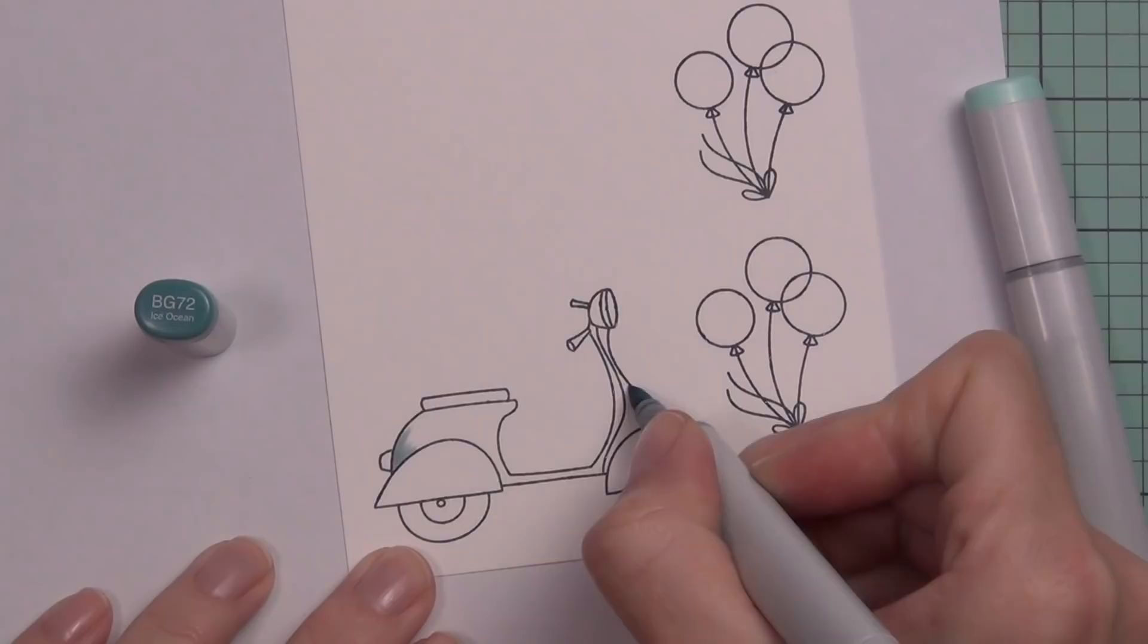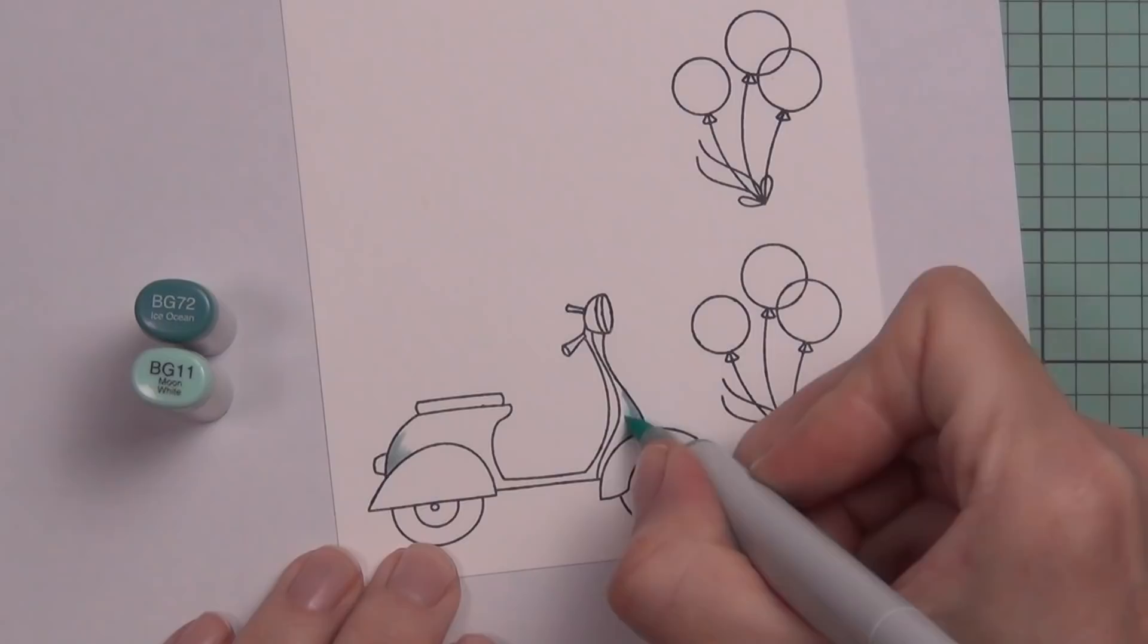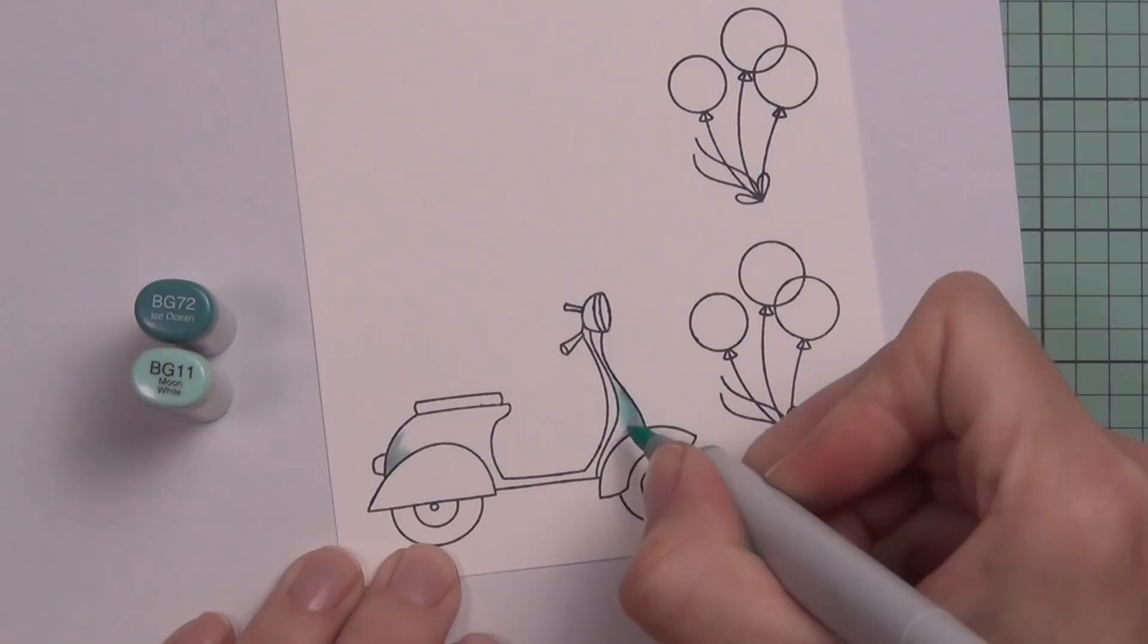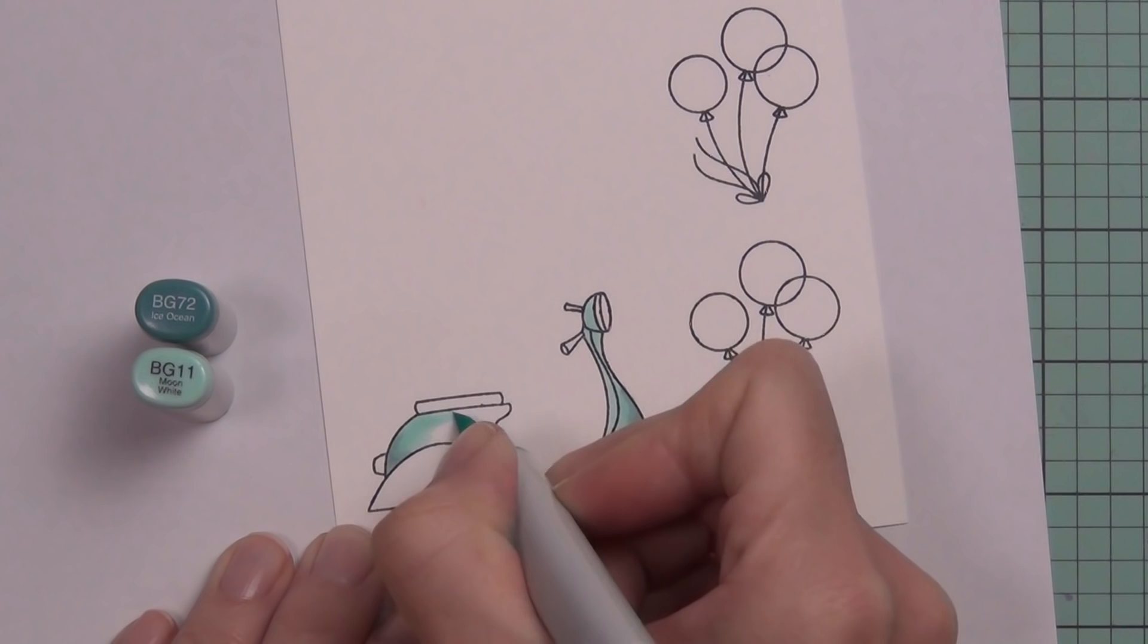I thought it would be a good idea to make two different types of swinging cards today just to give you a couple of options. Both cards are going to use this awesome set from Alan called Good Times, and I thought it would be really fun to have the scooter swinging from some balloons.